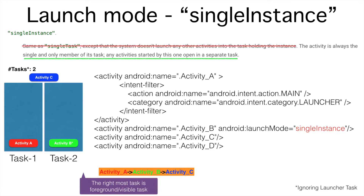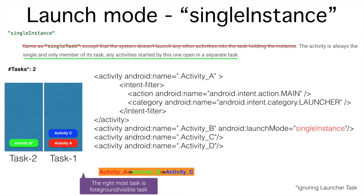Now what happens when I launch activity C? As per the definition, activity C cannot be part of task 2 because activity B can only be the sole activity in task 2. So activity C will be put in task 1 and brought to the foreground. After this, if I launch activity B again, it is already present in task 2, so there is no need to create another new instance — the existing activity B will be brought to the foreground.